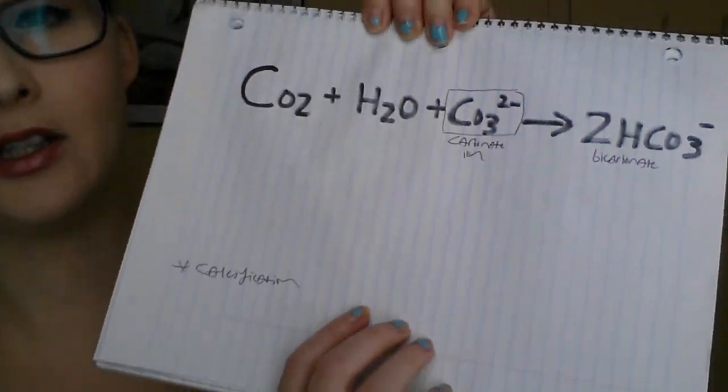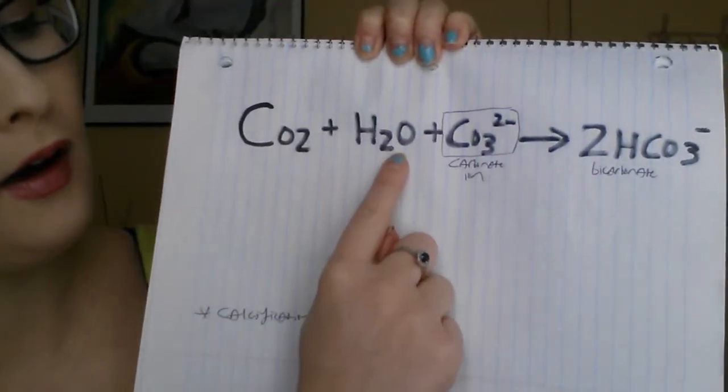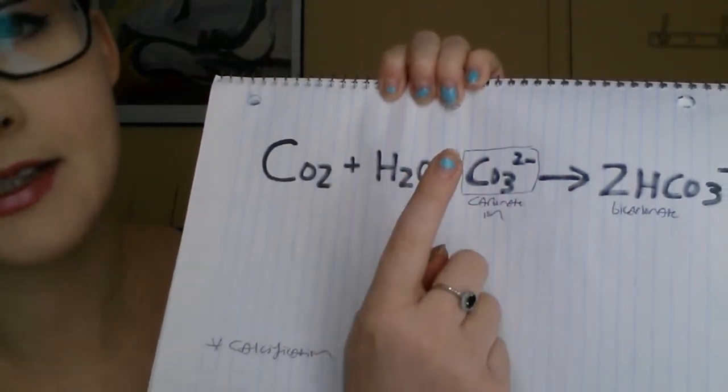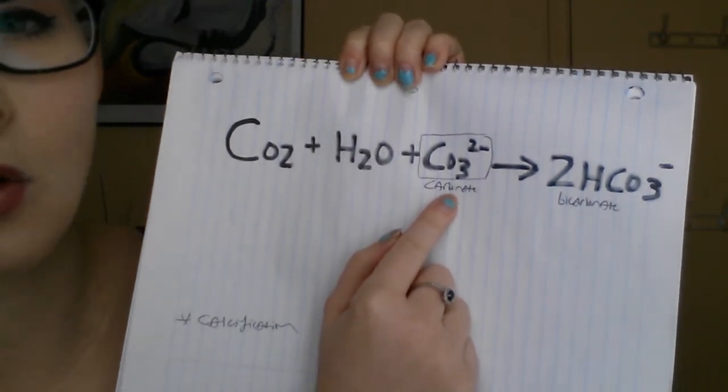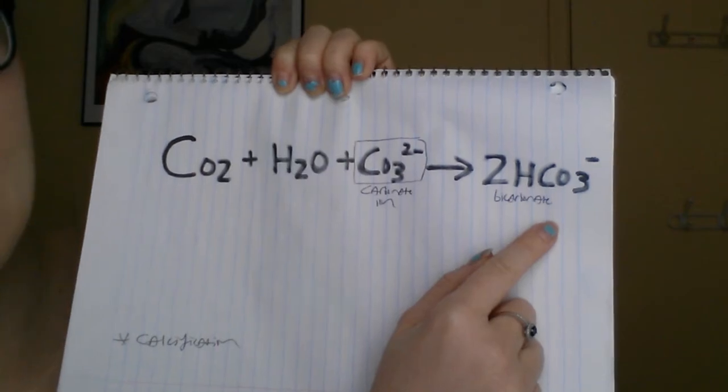The problem with acidification is it doesn't allow this calcification process. The ocean needs saturating carbonate in order for coral to be able to calcify and have healthy, thriving ecosystems. In this last equation, you have carbon dioxide added to water, plus the carbonate ion — which needs to be present for corals to calcify — and this creates bicarbonate. This shows that carbonate is being taken out of solution, so corals can no longer use it, they cannot calcify, and this is why there are so many problems.